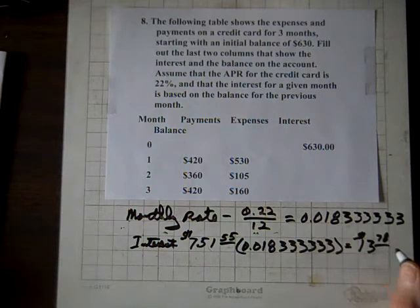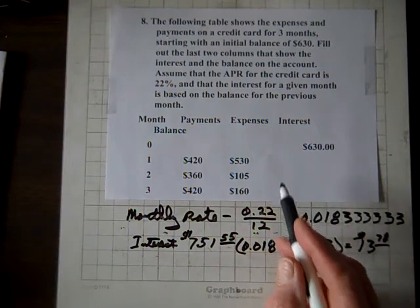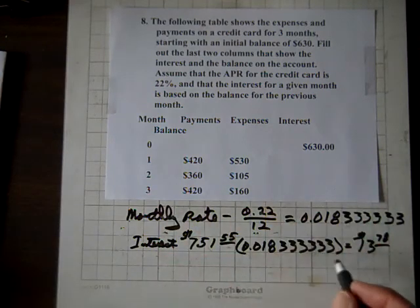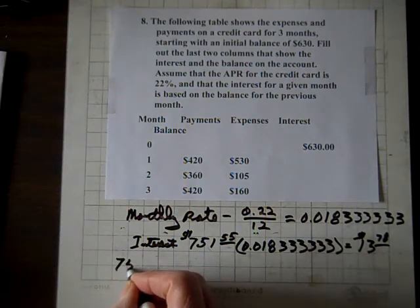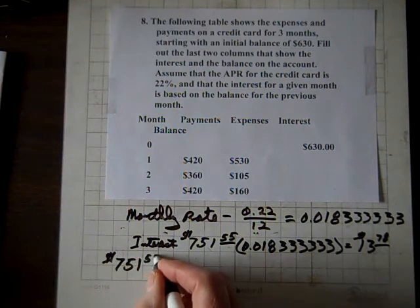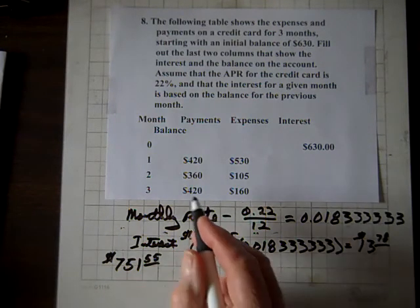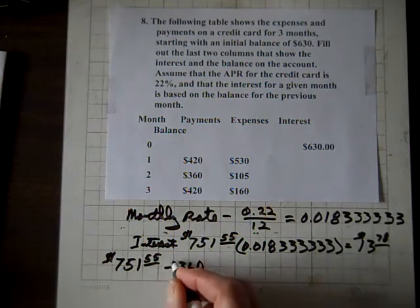And now that'll be your new interest for this row. So, to compute the value of that row, we're going to have, let's see, we've got $751.55. And from it, we made a $360 payment, so minus 360.